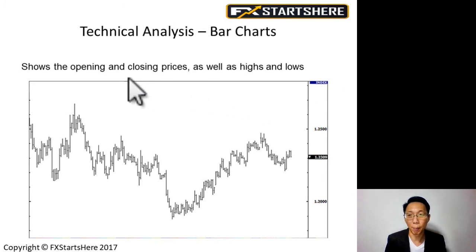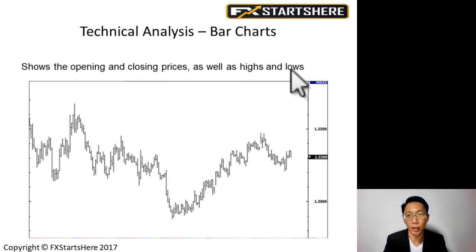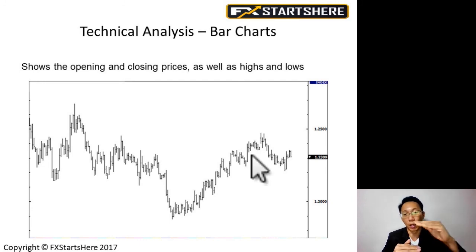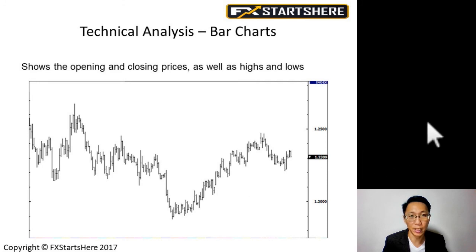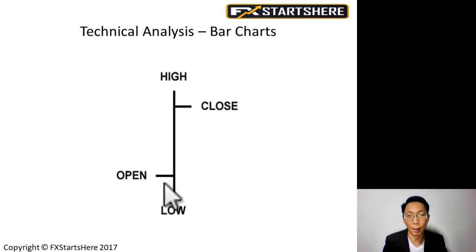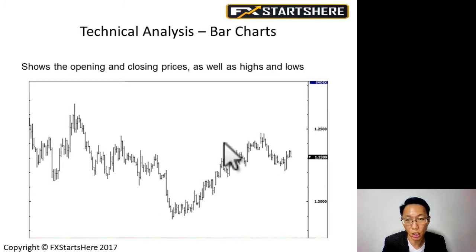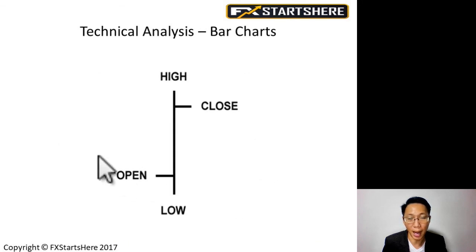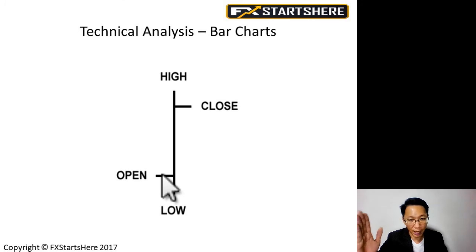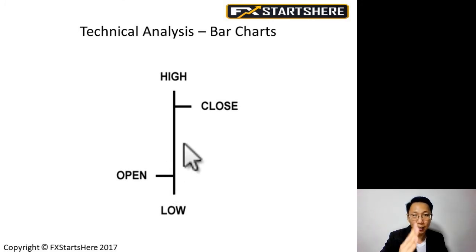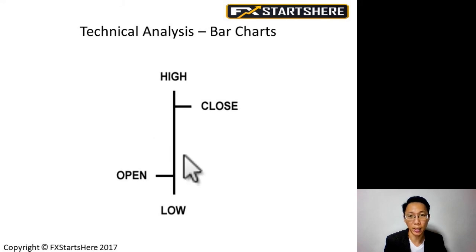Bar charts show us the open and closing price as well as the high and low within one time period. For example, on an hourly chart, each bar represents one hour — within that hour you know the opening price, closing price, the highest price reached, and the lowest price. On an individual bar, the open price is always on the left side and the close price is on the right, with the high and low shown by the vertical line.